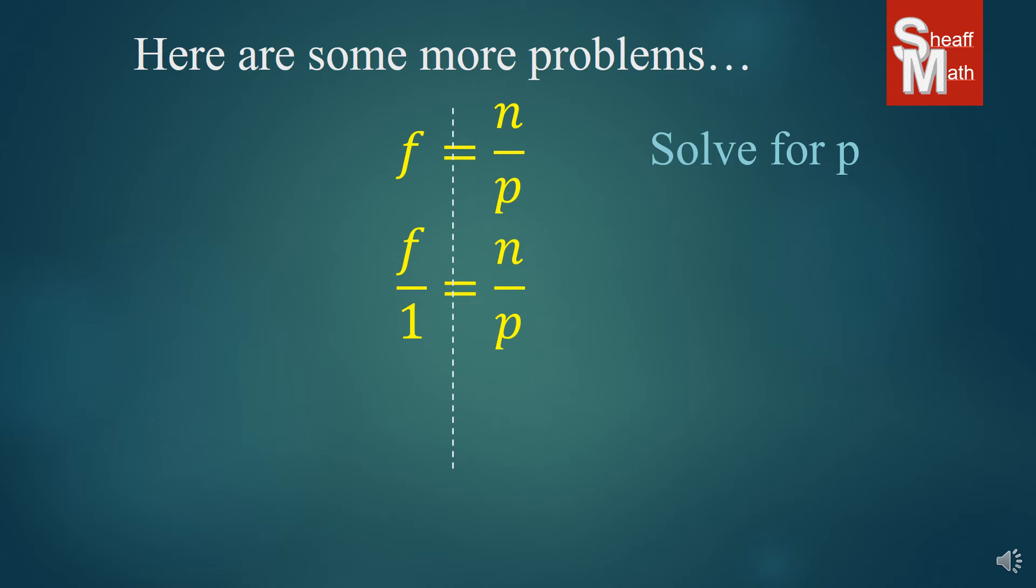Now we have two fractions equaling each other which is a proportion and we solve those by cross multiplying. By doing that, F times P and 1 times N equals FP equals N, and then we want to isolate the P so we divide by F and we end up with P equals N over F. Now there's other ways you could solve this one but I think you get into a real good habit of using proportions because there are a lot of problems in higher math where you'll have fractions on one side and doing the proportion really helps you out.